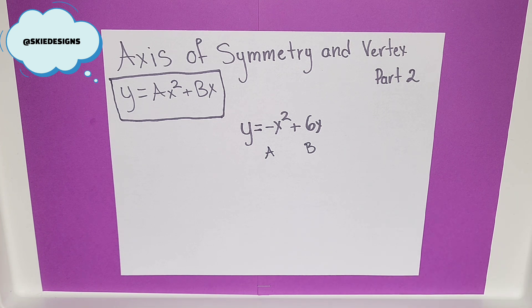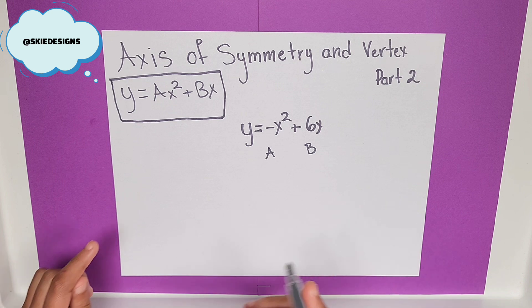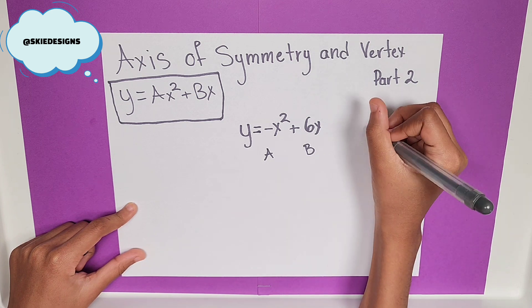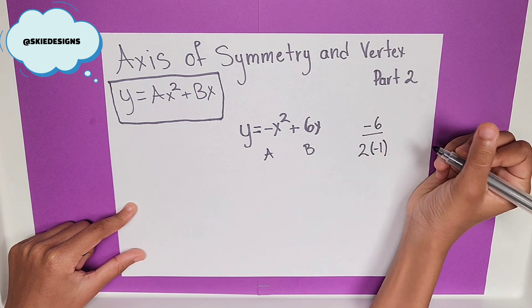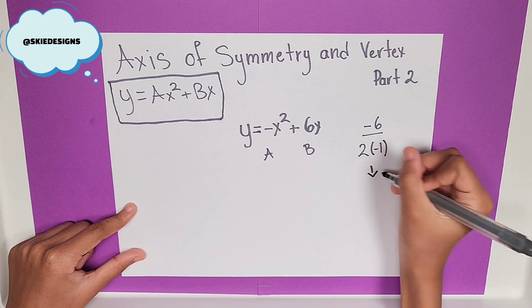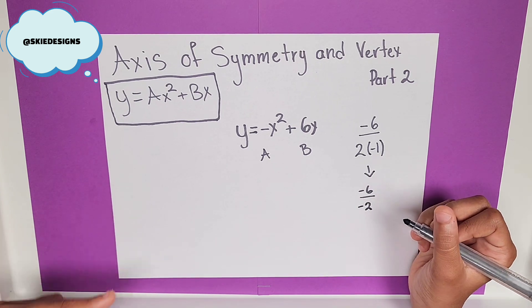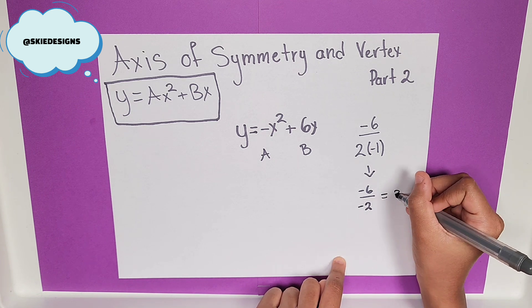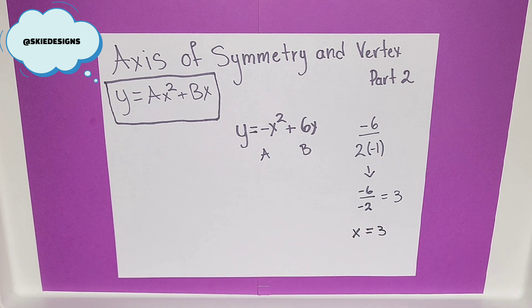Now, let's first solve for the Axis of Symmetry. We remember our equation from the last video, so this should be simple: negative b over 2a. So, this will turn into negative 6 over 2 times negative 1, since a is negative 1. This turns into negative 6 over negative 2, because negative 1 times 2 is negative 2. Now, when you divide a negative by a negative, it becomes a positive. So, negative 6 divided by negative 2 gives us positive 3. So, let's jot it down to remember that x is equal to 3. This is your Axis of Symmetry.